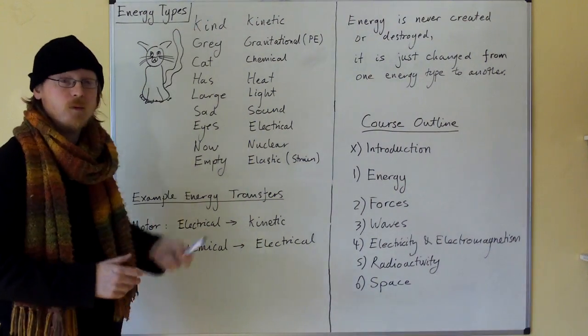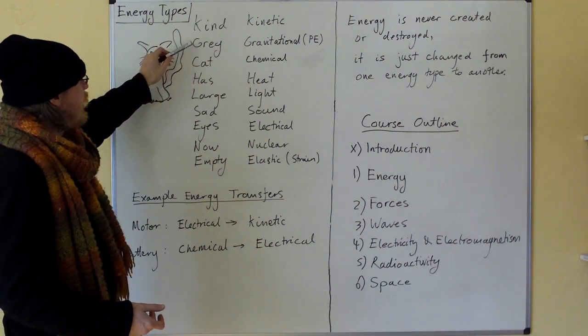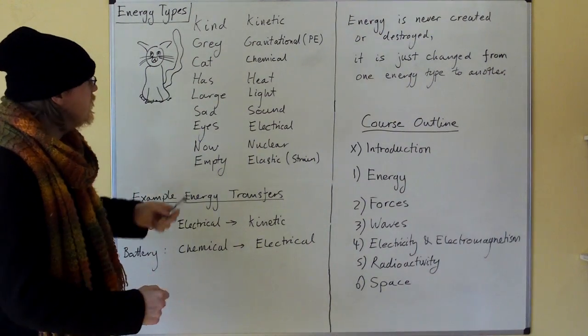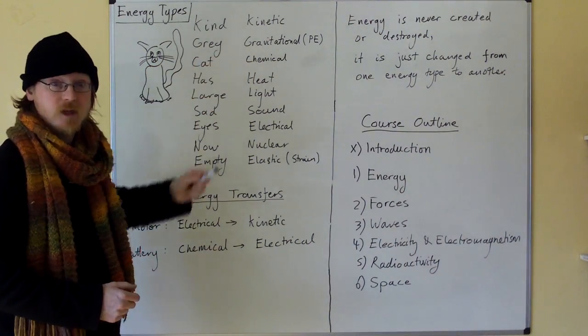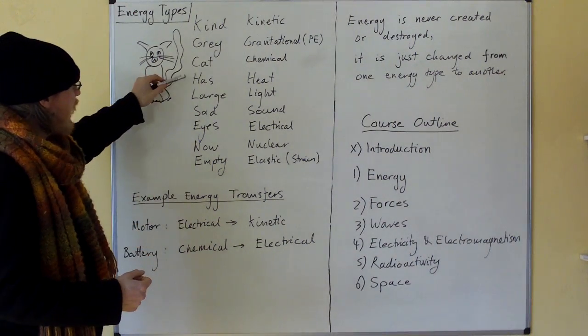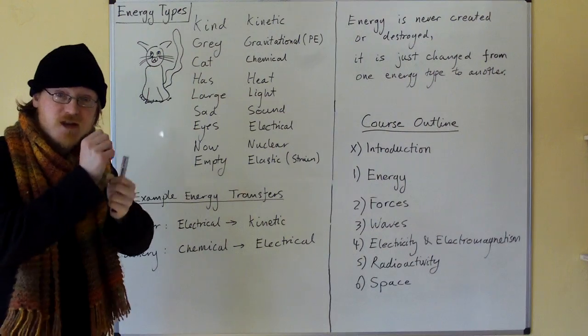K for kinetic, which is the energy of movement. G for gravitational, which is the energy in a gravitational field. C for chemical, which is the energy in chemicals, batteries and food. H for heat, which is the vibration of atoms.